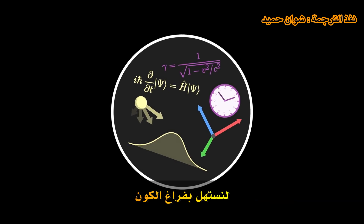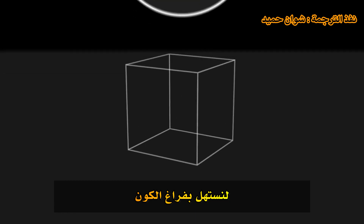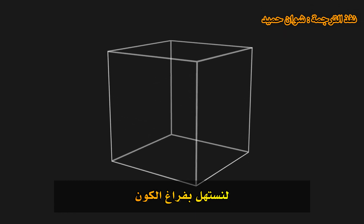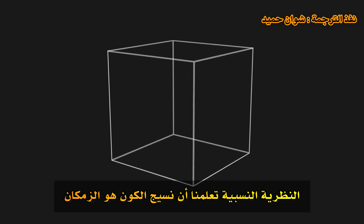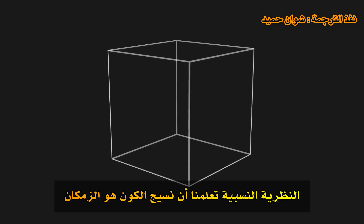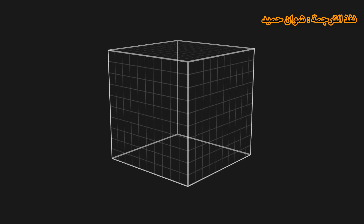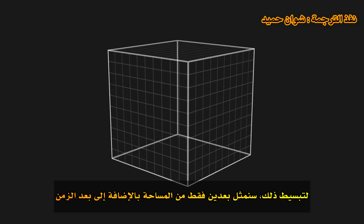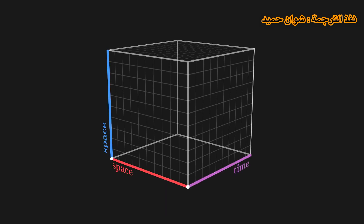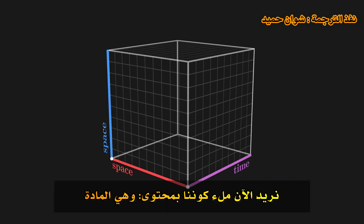To begin with, let's start with an empty universe. Relativity teaches us that the fabric of the universe is space-time. To simplify, we will represent only two dimensions of space, as well as the dimension of time. We now want to fill our universe with content — matter.